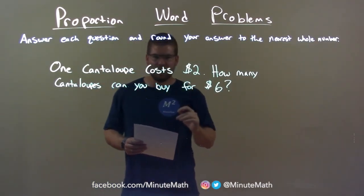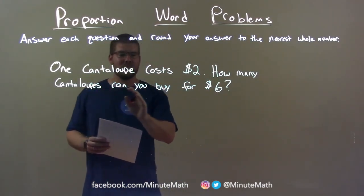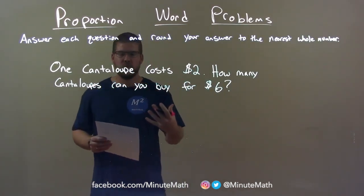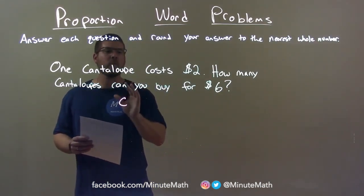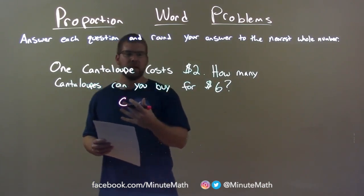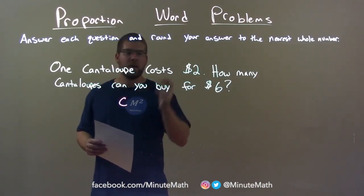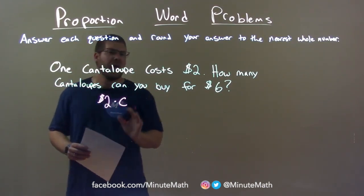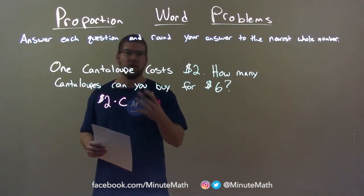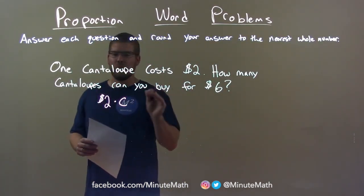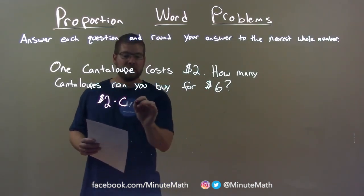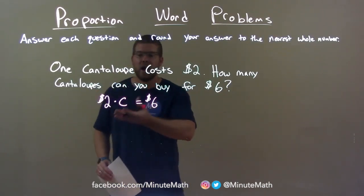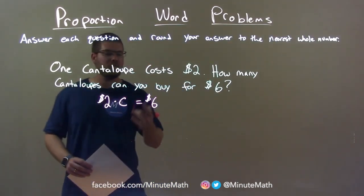One cantaloupe costs $2. How many cantaloupes can you buy for $6? What I want to do is create an equation. Let's let C be the number of cantaloupes we are going to buy — that's what we're going to find. We know it's $2 per cantaloupe, so we set up $2 times C, which represents the cost of a variable amount of cantaloupes. Now we need to set that equal to an end cost of $6.